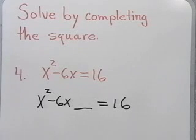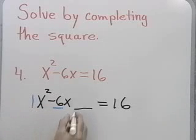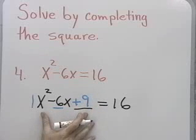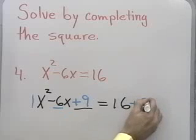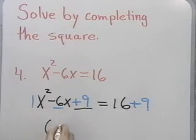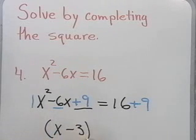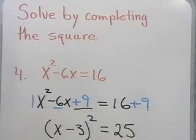So, what I'm going to add: first of all, I notice that the leading coefficient is 1, so I move to this term. Half of 6 is 3, the square of which is 9. So I'm going to add 9 onto the left side of this equation. The addition property of equality tells me I must do the same thing to the other side. Now, the left side is the binomial x minus 3, quantity squared, and the right side is 25.